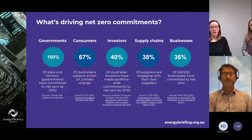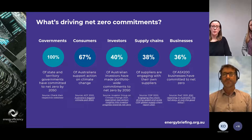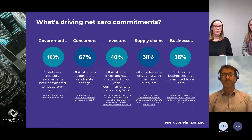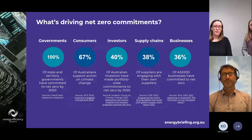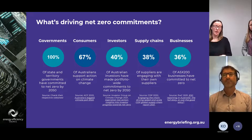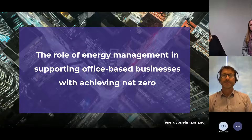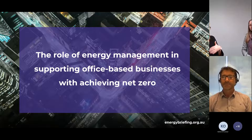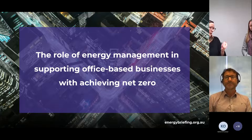The number of ASX 200 companies with net zero goals has been skyrocketing: 14 companies in 2020, jumping to 49 by March 2021, and 72 by end of 2021. The Business Council of Australia has also joined the chorus calling for net zero by 2050 with more ambitious 2030 interim targets. I'll now turn it over to Holly to talk about how energy management can drive emissions reductions in office-based businesses.